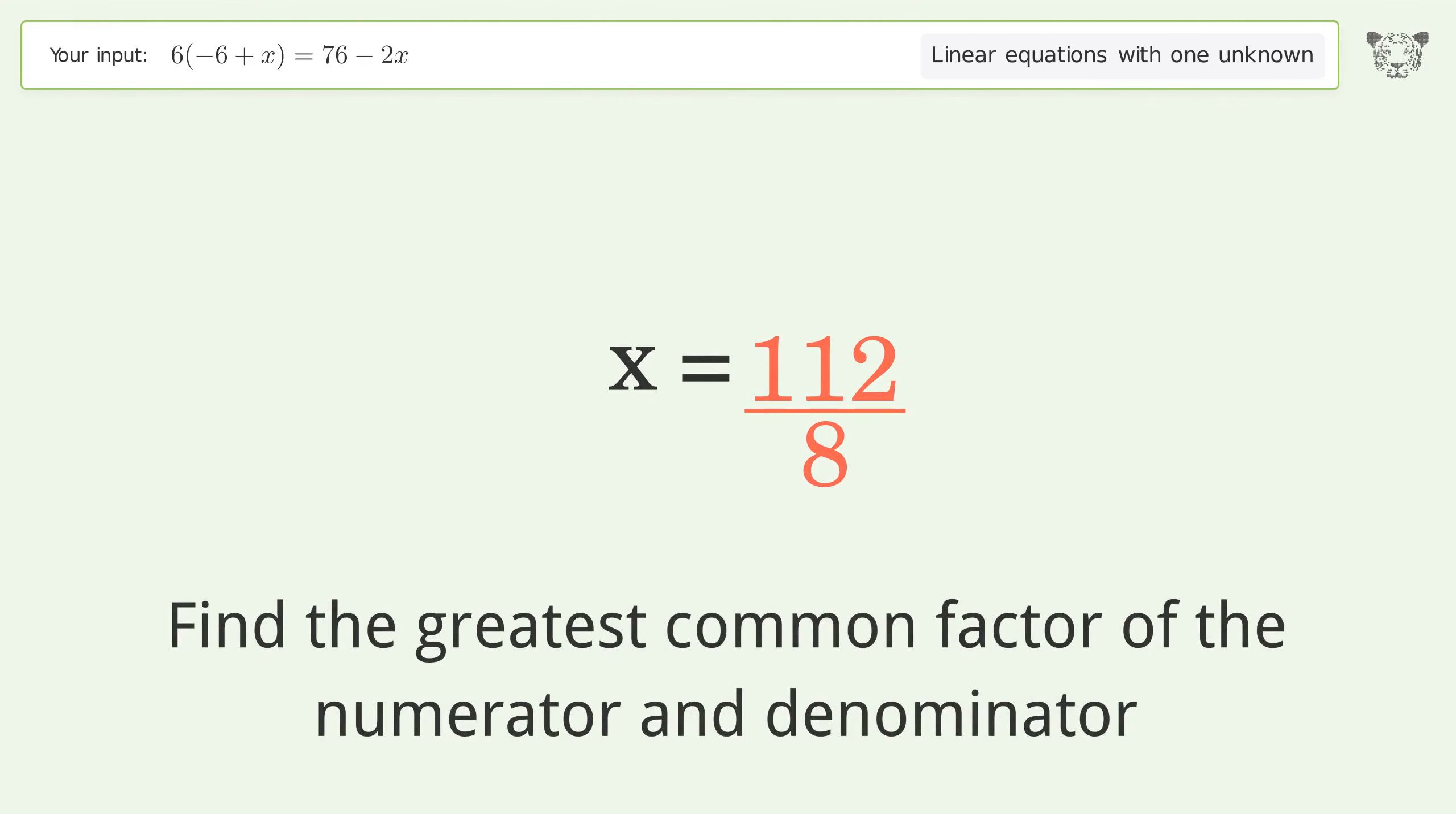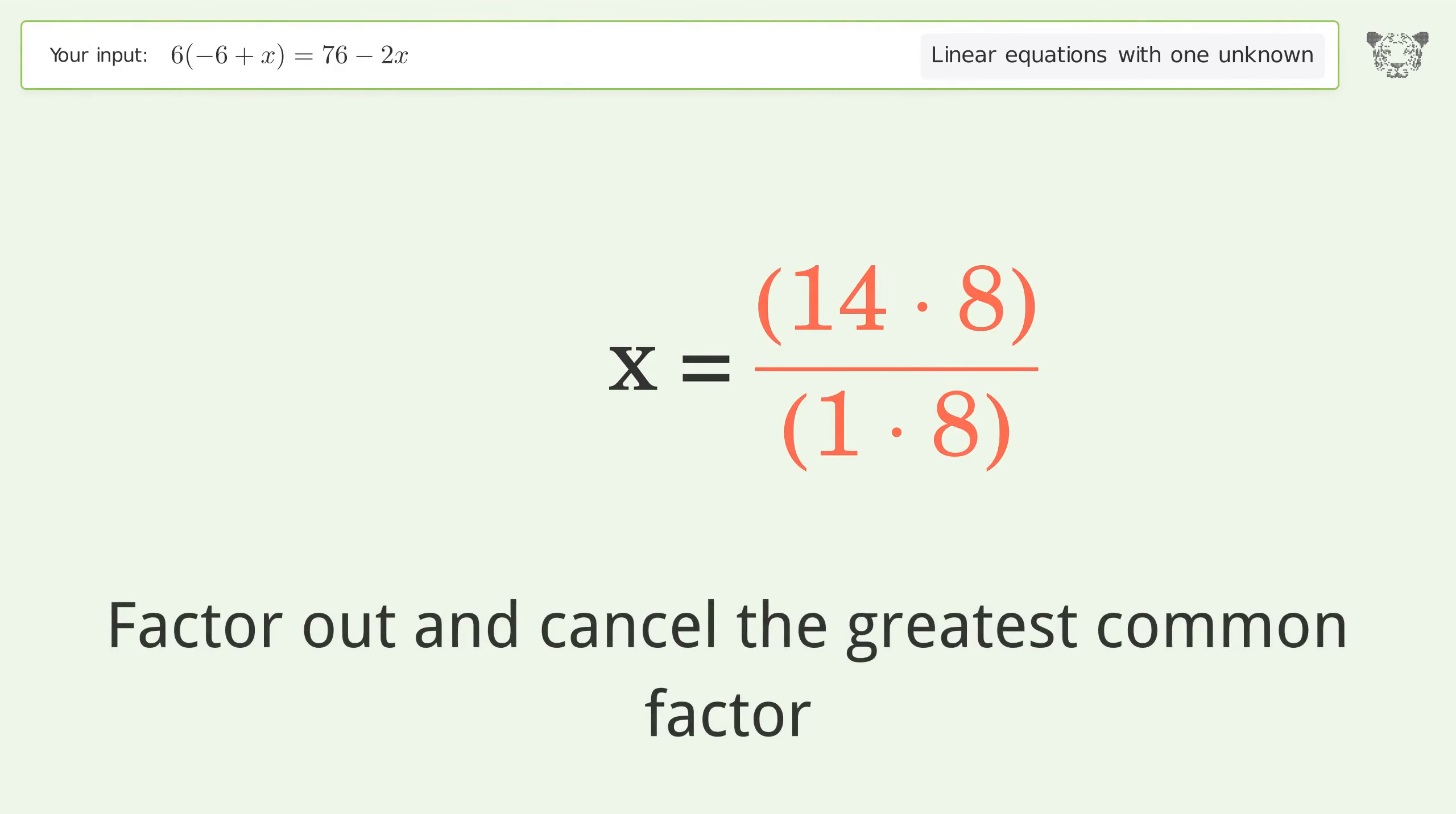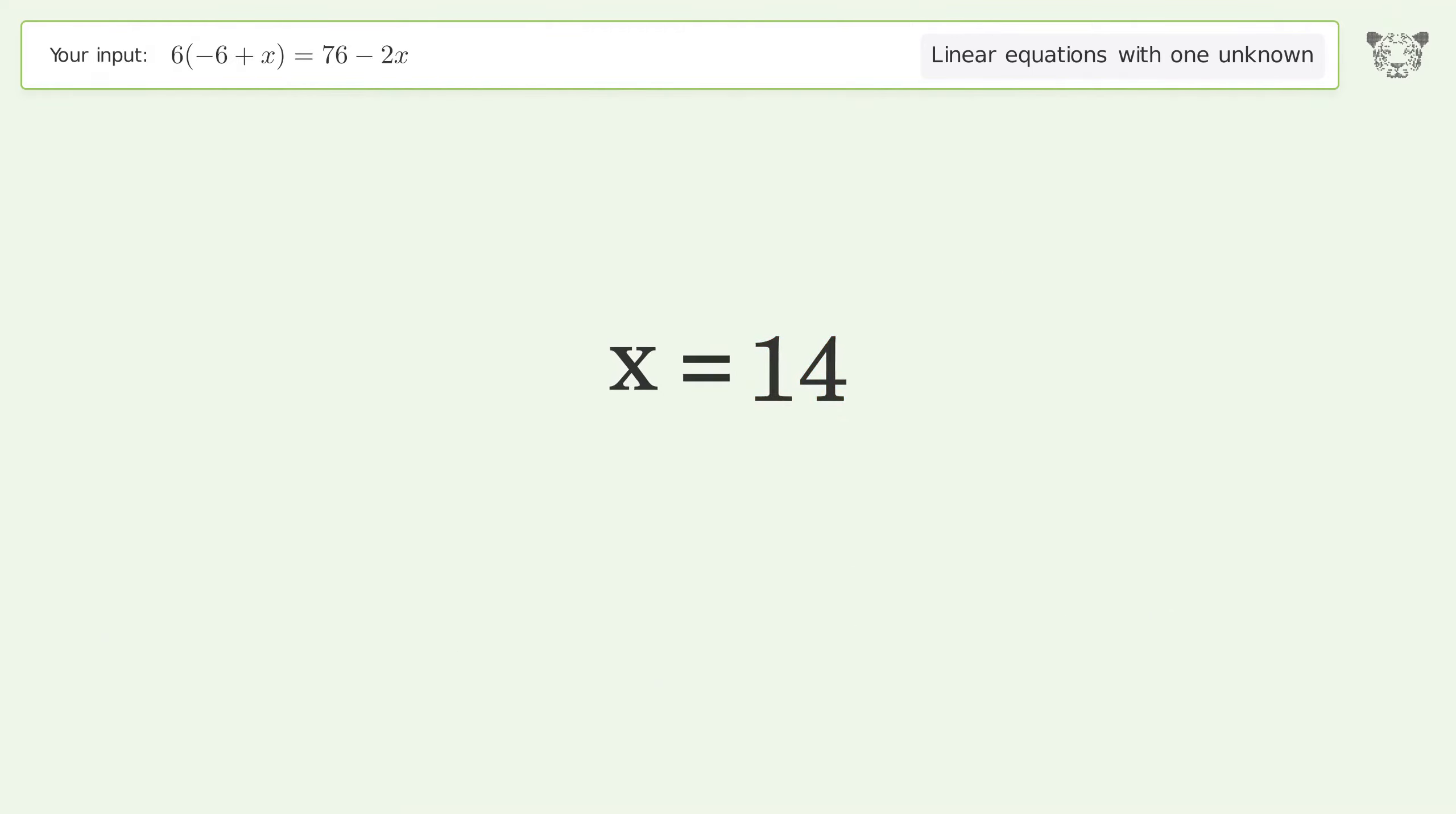Find the greatest common factor of the numerator and denominator. Factor out and cancel the greatest common factor. And so the final result is x equals 14.